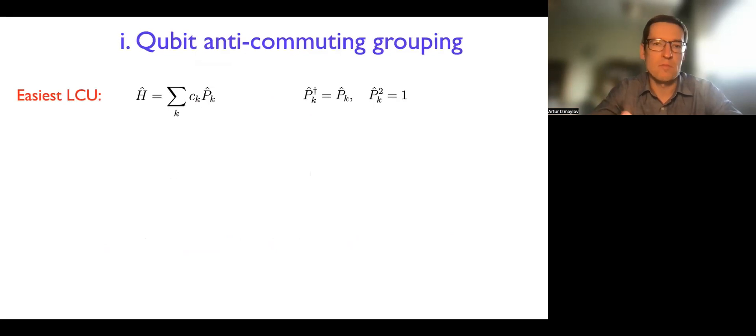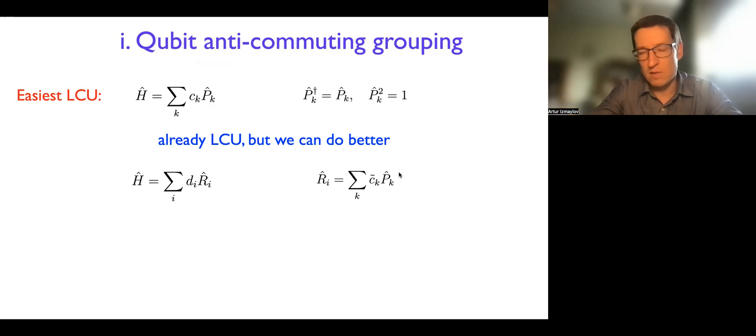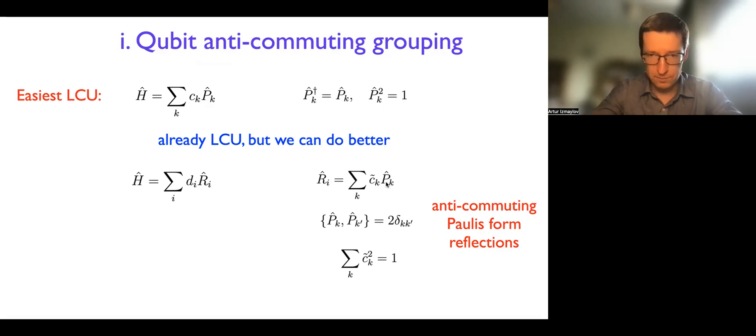And it turns out that in qubit representation, even though Pauli products are already LCU, it's quite simple LCU and you can do better by grouping Pauli products. So the way you group Pauli products, if you do arbitrary grouping, then you will lose the property that the group will be a unitary operator. But if you're careful and satisfy certain relations, like for example, you group anti-commuting Pauli products with the normal normalization of their coefficients, turns out that you can obtain unitaries that way. That's at least one way to create bigger unitaries out of a linear combination of Pauli products.